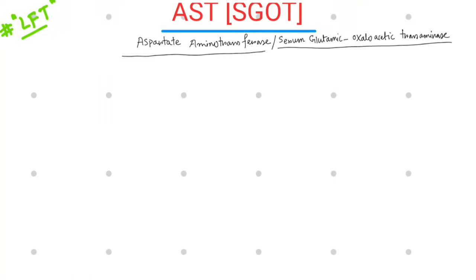Today, under liver function tests, we are going to discuss about an enzyme found in the liver, known as AST or Aspartate Aminotransferase, formerly known as SGOT or Serum Glutamic Oxaloacetic Transaminase. These are mouthful names, but let's not get confused. Basically, if there is any hepatocellular damage, these enzymes are elevated in the blood — that is the basic concept. Now let's get into details.